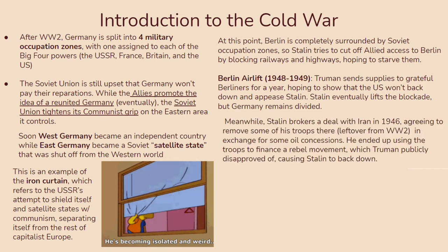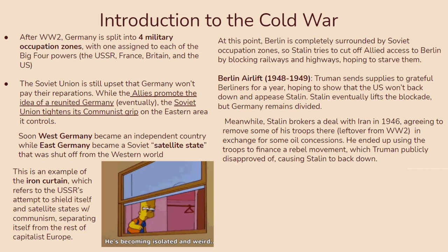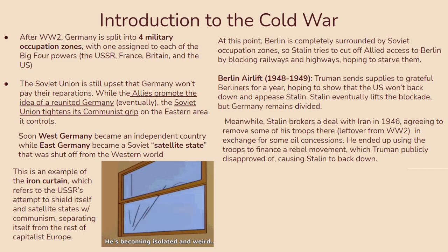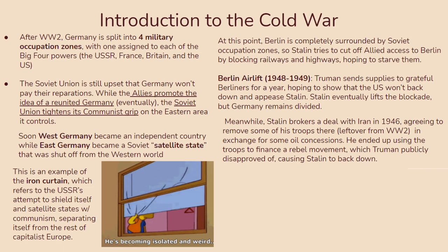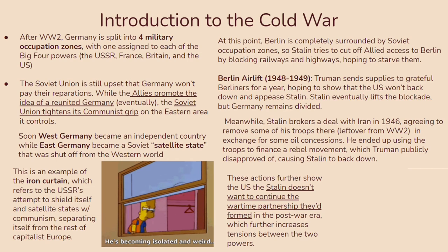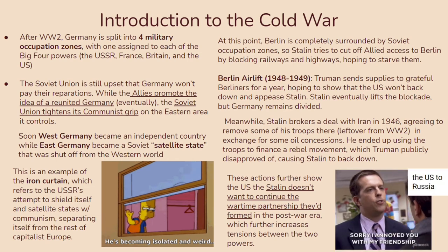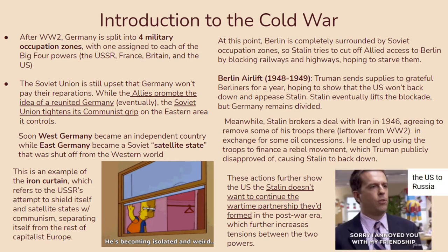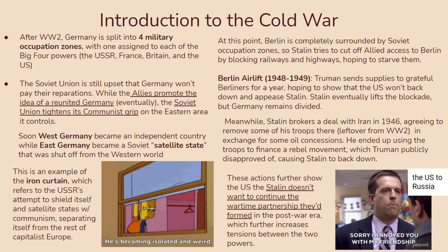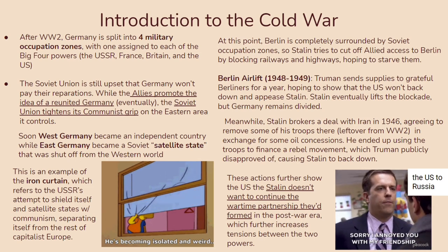You should also know that Stalin managed to broker a deal with Iran in 1946, agreeing to remove some troops left over from World War II in exchange for oil concessions. He ended up using the troops to finance a rebel movement, which Truman publicly disapproved of, causing Stalin to back down. All of these actions further showed the US that Stalin didn't want to continue the wartime partnership into the post-war era, which further increased tensions between the two powers.